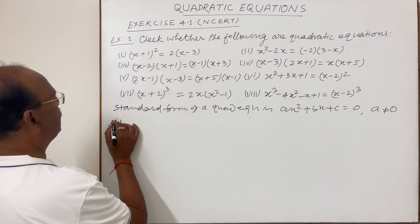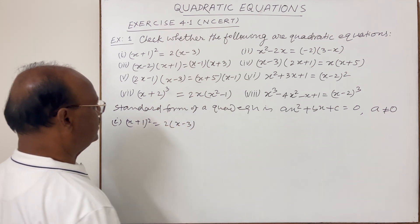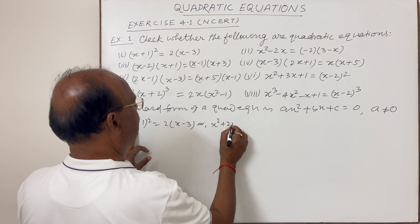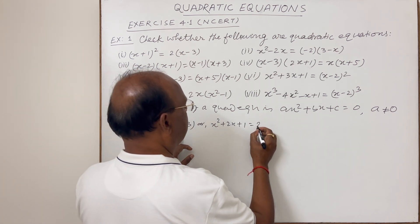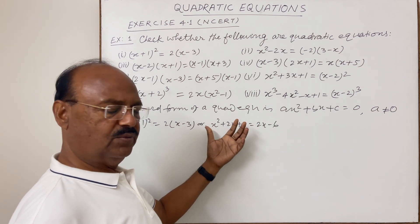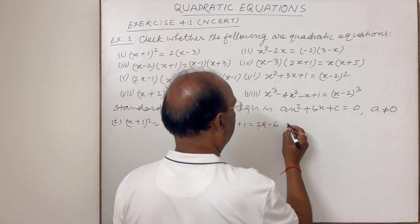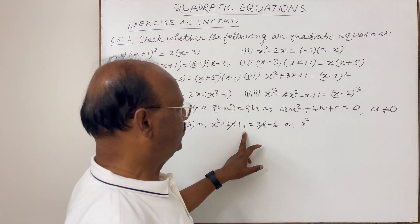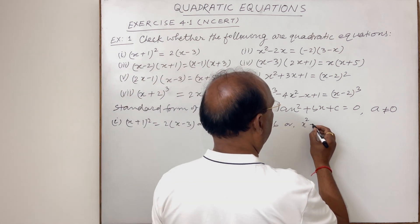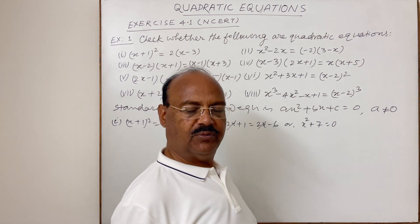First equation: (x + 1)² = 2(x − 3). Simplifying, the left-hand side is x² + 2x + 1 and the right-hand side is 2x − 6. We can cancel 2x from both sides, and transposing −6 to the left gives 1 + 6 = 7, so the equation becomes x² + 7 = 0.